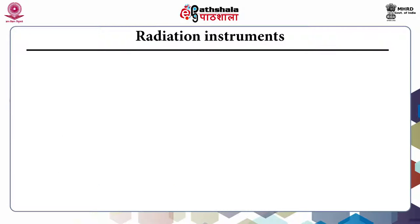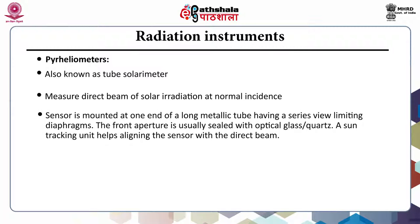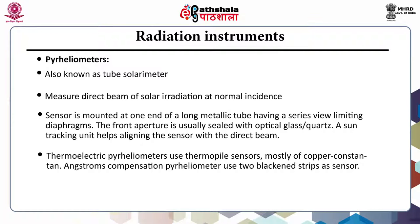Radiation instruments are generally referred to as radiometers. The first is pyrheliometer, which is meant for measurement of direct solar radiation of the sun — also known as a solar emitter. The sensor is mounted at one end of a long metallic tube having a series of view-limiting diaphragms, with the front aperture sealed with optical glass or quartz, and a sun tracking unit aligns the sensor with the direct beam. There are two types: thermoelectric type pyrheliometers, which use thermopile sensors mostly made of copper-constantan, and the Angstrom compensation pyrheliometer, which uses two blackened strips as sensors.